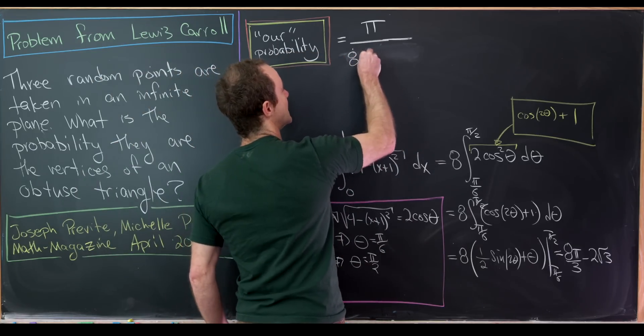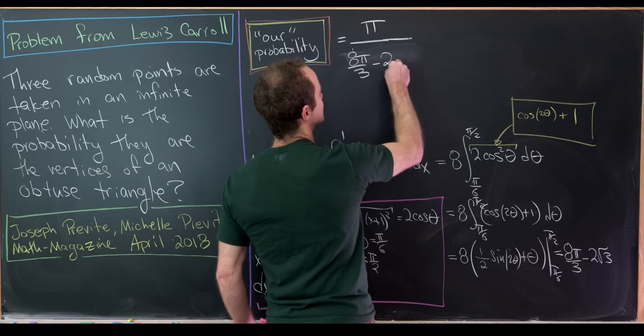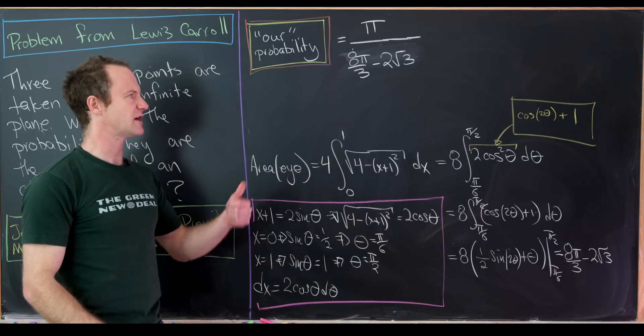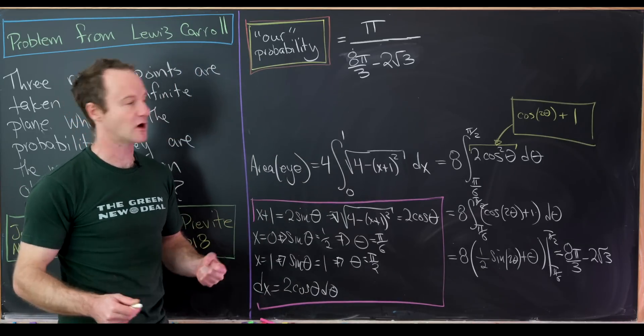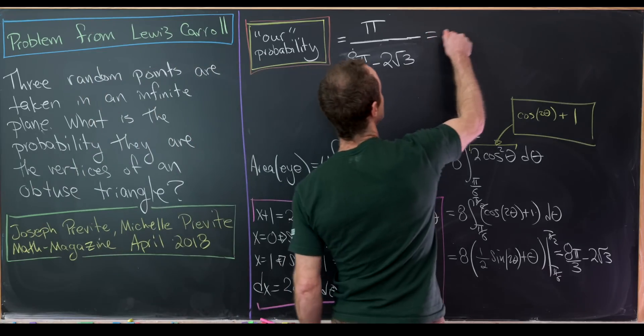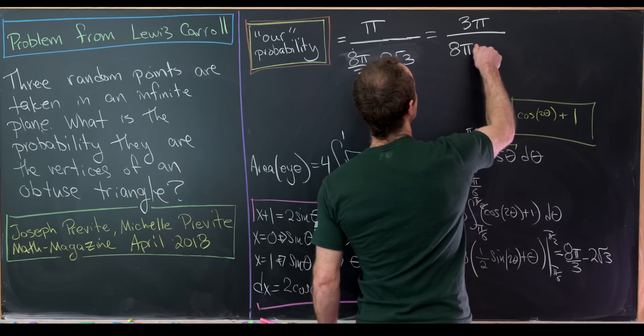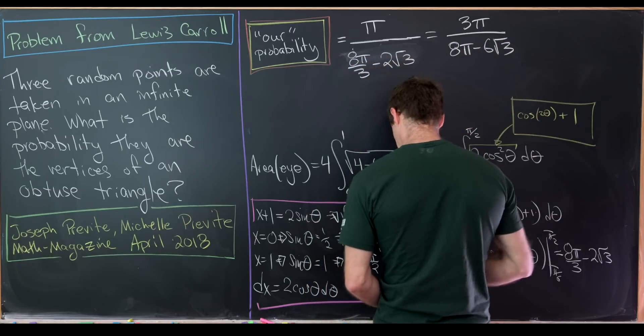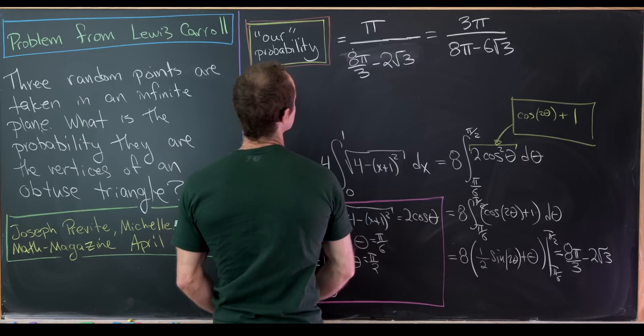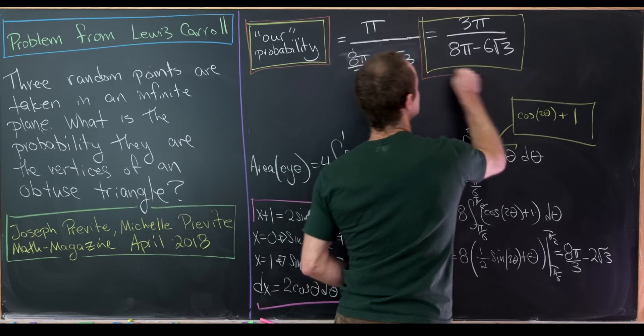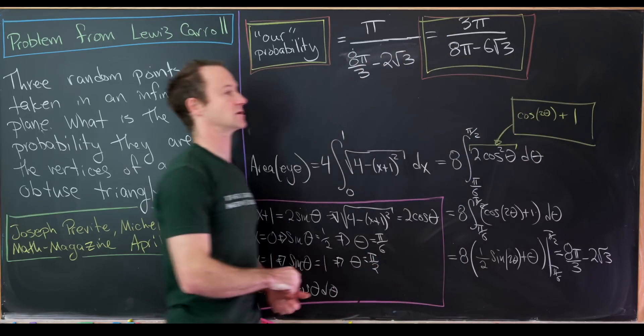So that means we can take this area of I and replace it with the number that we've just calculated. In other words, 8 pi over 3 minus 2 times the square root of 3. But I think if we multiply the numerator and the denominator by 3, we'll have something that's a little nicer. We'll have 3 pi over 8 pi minus 6 times the square root of 3. And that has a little bit better of a feel to it. And that's what I would take as maybe the best form of our final solution.